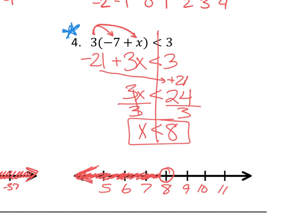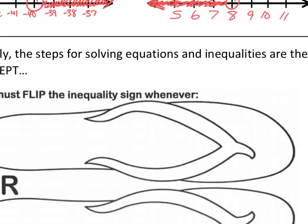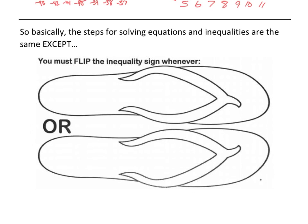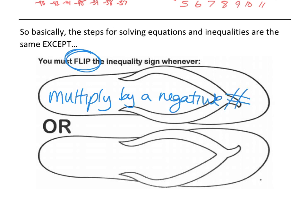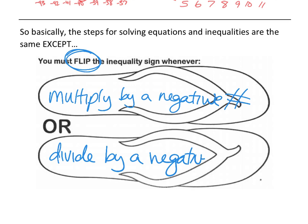So far, literally nothing has changed except at the end we've been graphing our answer. The rules have all been the same for inequalities and equations. Here's the one time the rules are different: the steps for solving equations and inequalities are the same, except we must flip the inequality sign whenever we multiply by a negative number or we divide by a negative number.